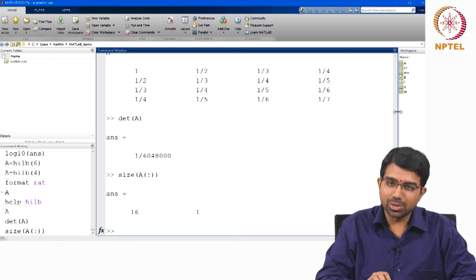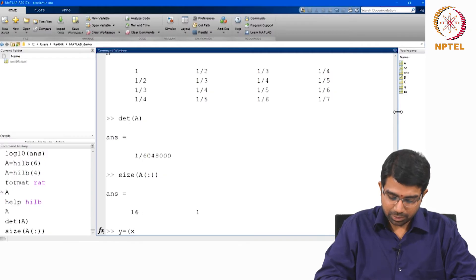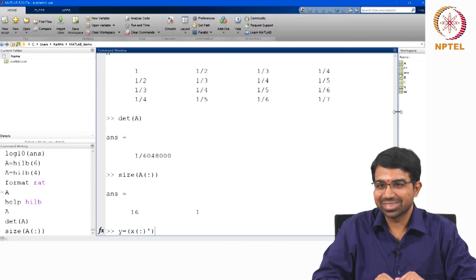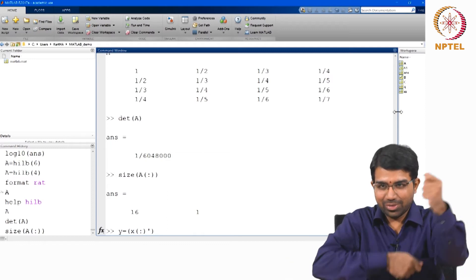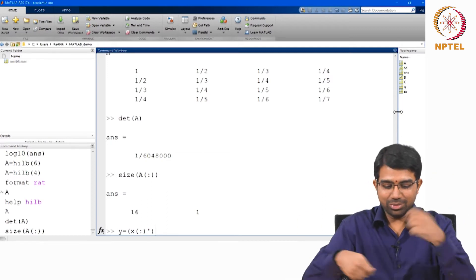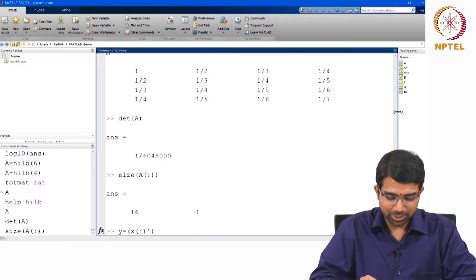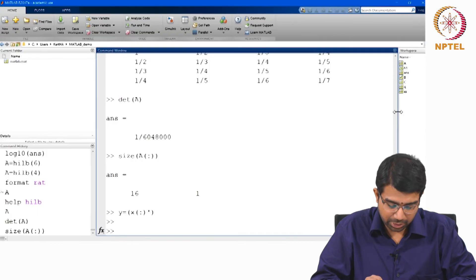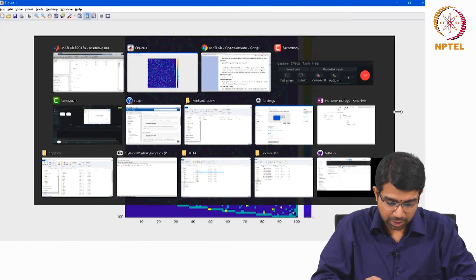So in fact, a usual hack that people use is something of this sort. This makes sure that you have a row vector at the end of the operation. You take X colon which will give you a column vector of whatever you have and then you make it into a row vector by transposing it.